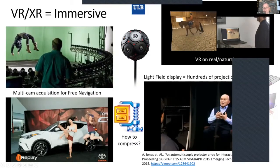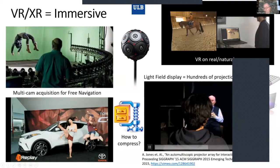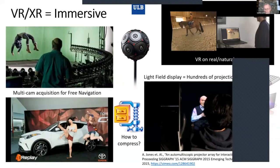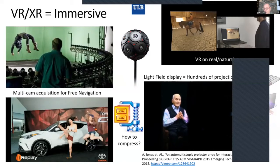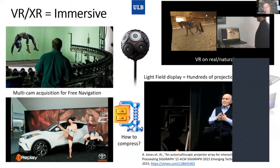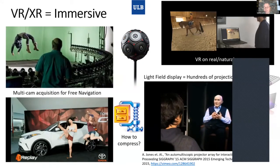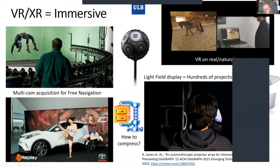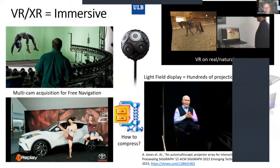We also have light field displays where you project hundreds of different images in different directions, giving an impression of 3D without wearing glasses. So all of this is immersive, and it's always about having multiple input camera views and multiple output data that you want to create. The question is, of course, how can we compress all these things — if you have hundreds of video streams, you need high compression.